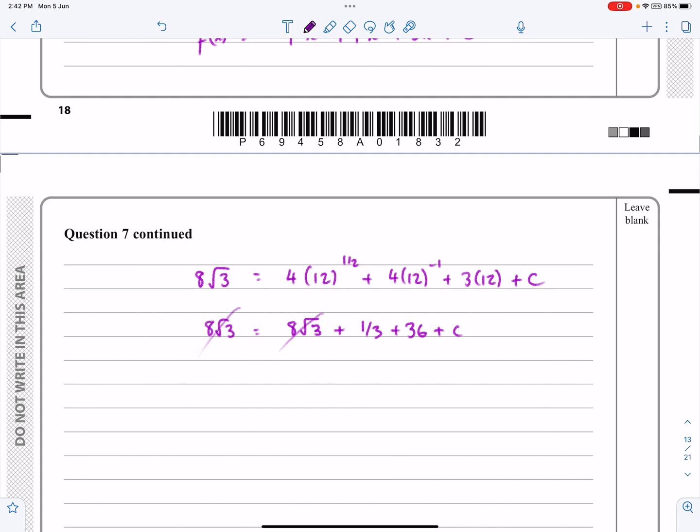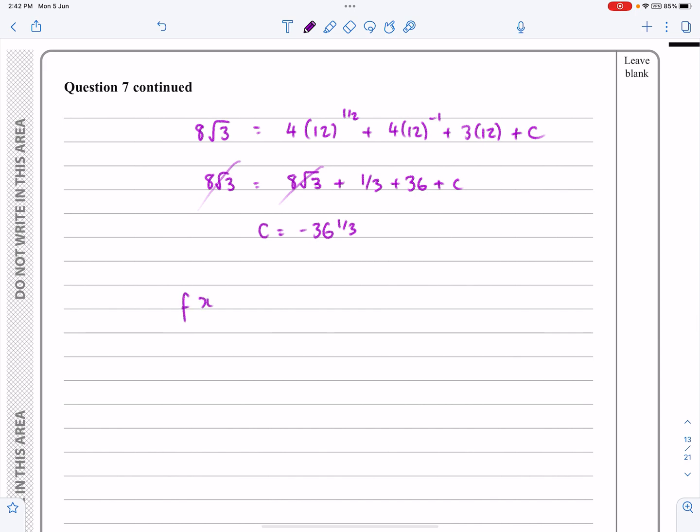So rearranging all of that, those cancel, take the 36 and the third over, I'm going to get c equals minus 36 and a third. Now remember, they actually wanted what f(x) was going to be.